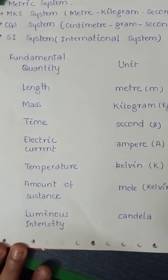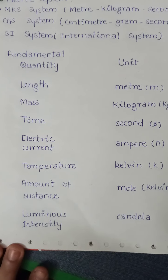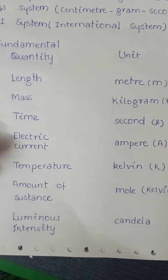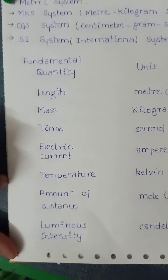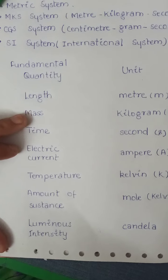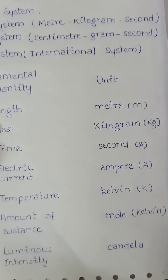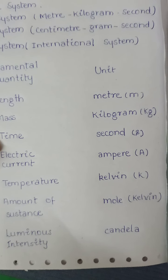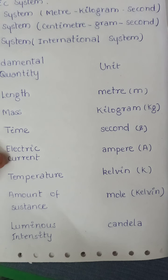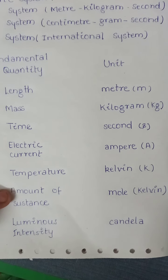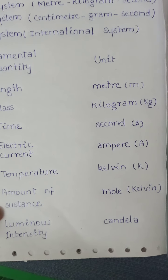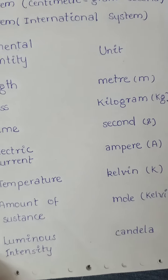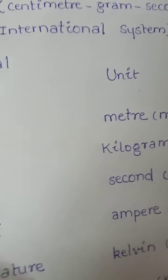The units of seven fundamental physical quantities in the SI system are given in this table. The unit of length is meter. The unit of mass is kilogram. The unit of time is second. The unit of electric current is ampere. The unit of temperature is Kelvin. The unit of amount of substance is mole, and the unit of luminous intensity is candela.